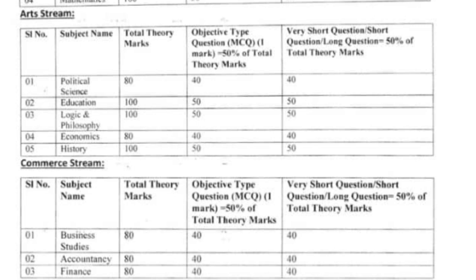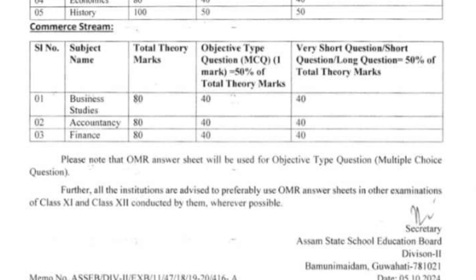For Education (100 marks), 50 marks is MCQ and the remaining 50 marks covers short questions, very short questions, and long questions. Logic and Philosophy is 100 marks — 50 marks MCQ, with long questions, short questions, and very short questions. Economics is 80 marks — 40 marks MCQ — followed by long, short, and very short questions. History is 100 marks — 50 marks MCQ — with short, long, and very short questions.